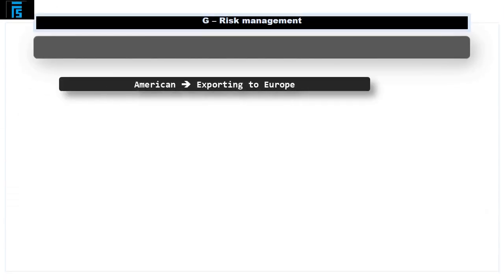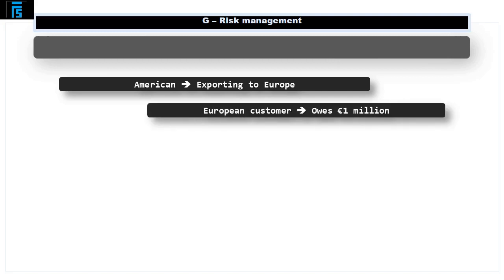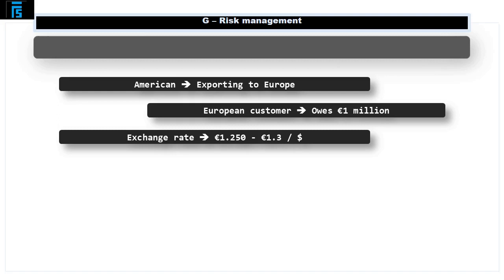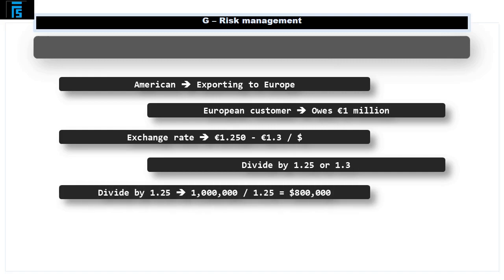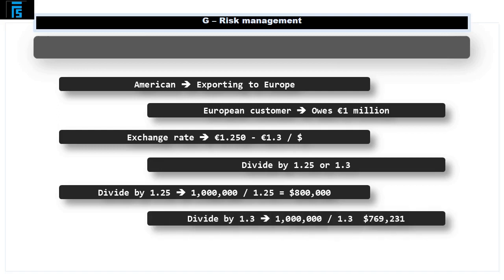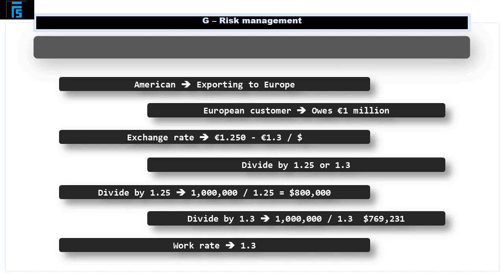If I am an American who exports to Europe and my European customer owes me €1 million, suppose the exchange rate when they pay me is €1.25 to €1.3 per dollar. I need to divide by either €1.25 or €1.3 to work out how many dollars the bank will give me when I sell them the euros. Dividing by 1.25 gives $800,000, but dividing by 1.30 gives $769,231. Since 1.3 gives the smaller result, that is the worst rate for me and the one the bank will apply.